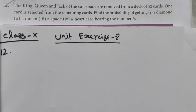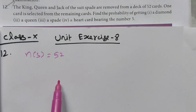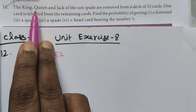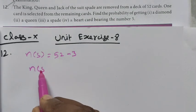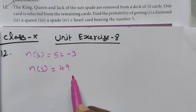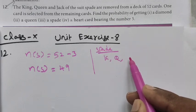Class 10, Unit Exercise 8, Question number 12. The king, queen, and jack of spades are removed from a deck of 52 cards. One card is selected from the remaining cards. Find the probability of getting: a diamond, a queen, a spade, a heart card bearing the number 5. Total cards N(S) = 52. After removing the spade king, queen, and jack, the total number of remaining cards is equal to 49.